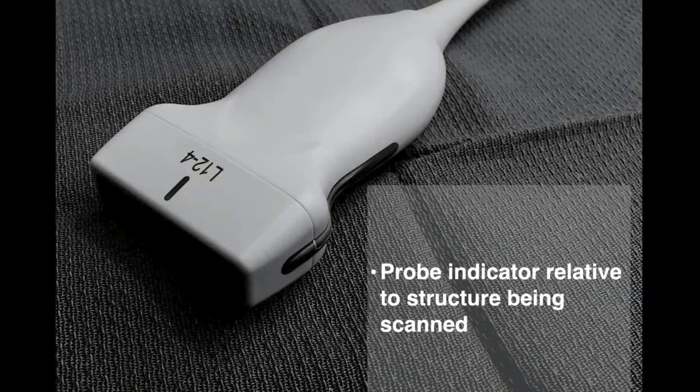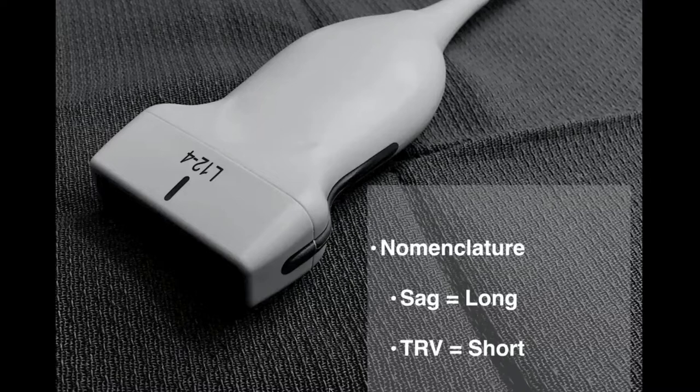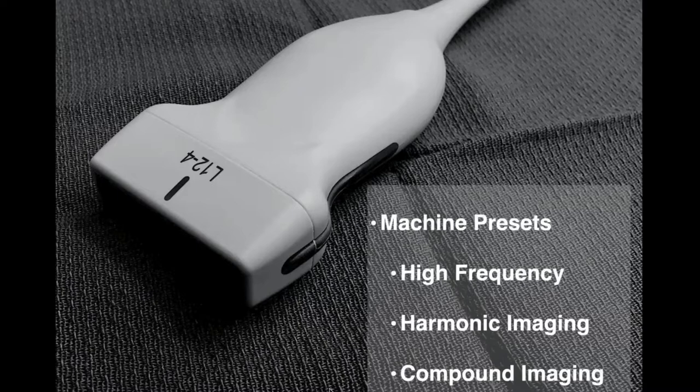One difference with MSK versus regular ultrasound is that the probe indicator is oftentimes oriented relative to the structure being scanned, as opposed to the patient's true sagittal or transverse orientation. Things are also renamed a little bit — instead of SAG and transverse, it's oftentimes labeled short and long. So if you're doing a tendon, the probe orientation is relative to that tendon. In long axis we call it tendon long, and in cross-section, tendon short versus tendon transverse.